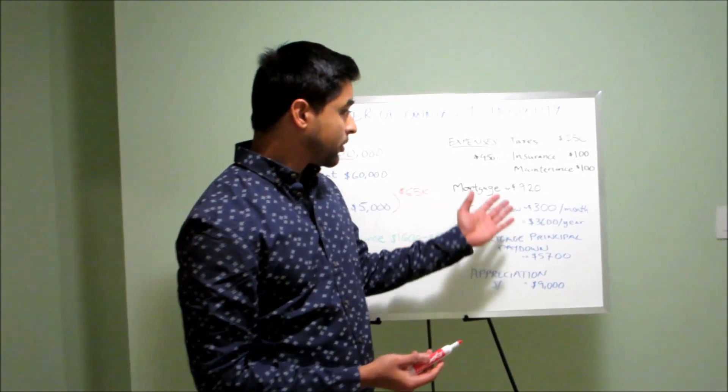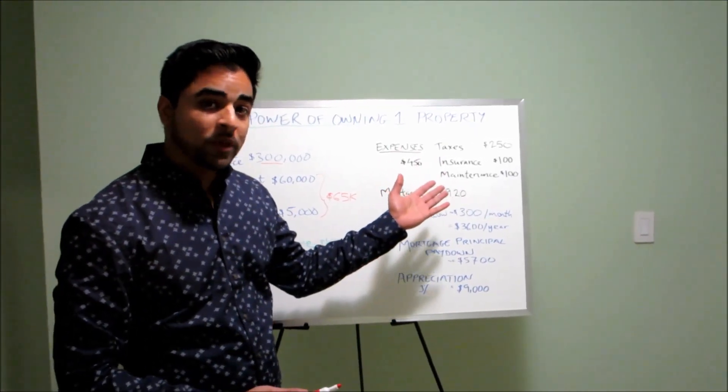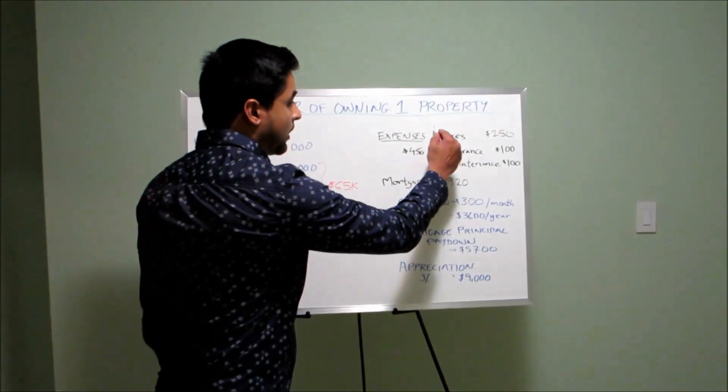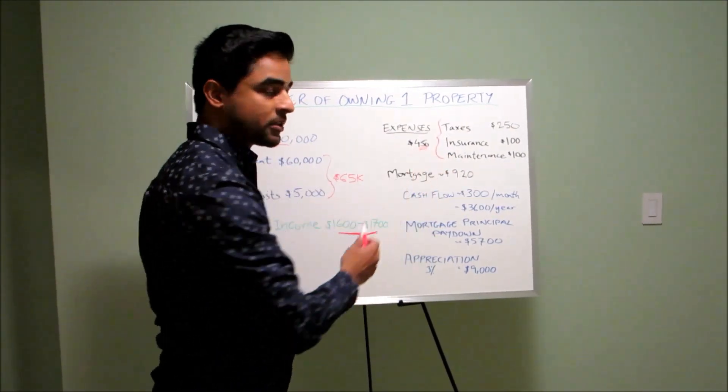Now let's look at our expenses. Really quickly, your taxes, your insurance, and your maintenance and repairs costs. So all of that is going to amount to $450 a month. These are monthly expenses.